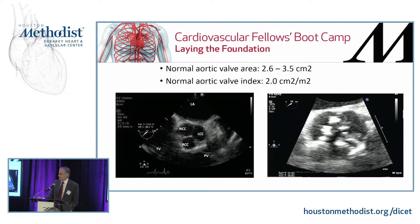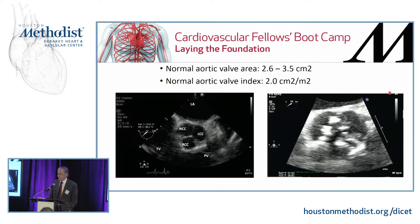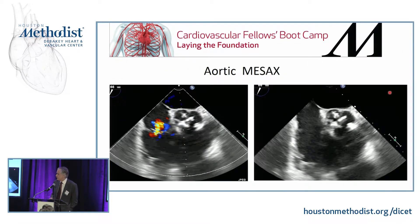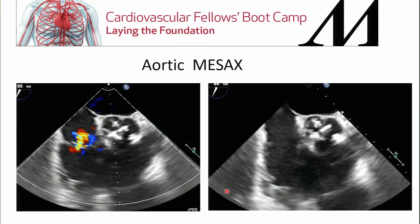On the left is a normal aortic valve — left, non, and right coronary cusps visible, with nice thin leaflets. Over on the right, not so much. There's a large amount of calcium deposited and the leaflets are not moving very well. What you would see in systole is a very small orifice on the stenotic side, and a lot of turbulence in the left ventricular outflow tract.